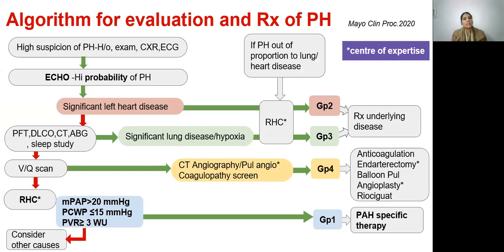This is the algorithm for evaluation and treatment of pulmonary hypertension, which starts with having a high suspicion. Remember, even when history, examination, chest X-ray, and ECG are normal, a patient could still have pulmonary hypertension. The first non-invasive modality is to do an echo. If echo shows high probability of pulmonary hypertension, the patient should be evaluated for the underlying group. Start with the most common, group 2, and proceed towards the least common. Look for significant left heart disease on echo, which indicates group 2 pulmonary hypertension.